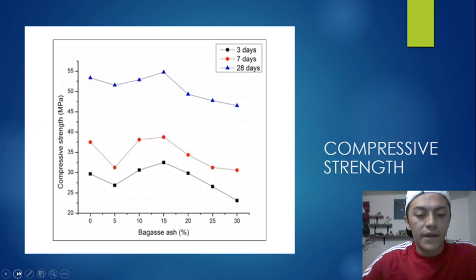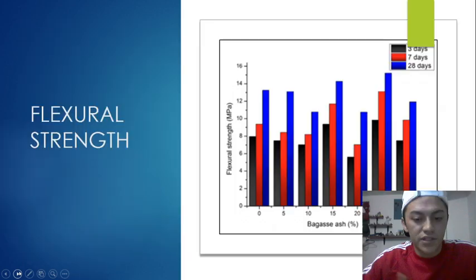For flexural strength, the percentage of bagasse ash and the days of curing show that 15% and 25% of bagasse ash are the ones that have the best behavior.